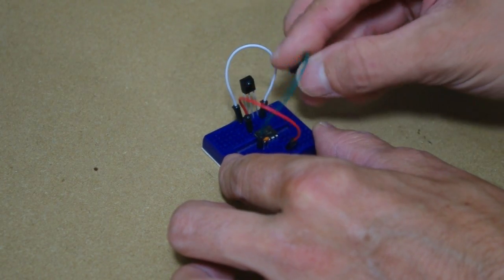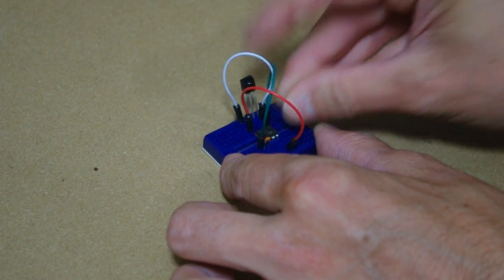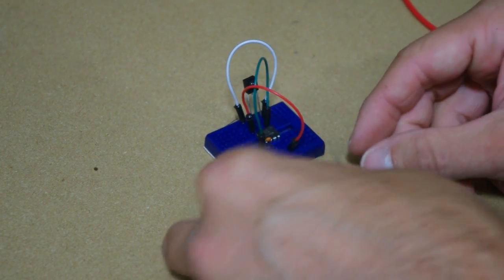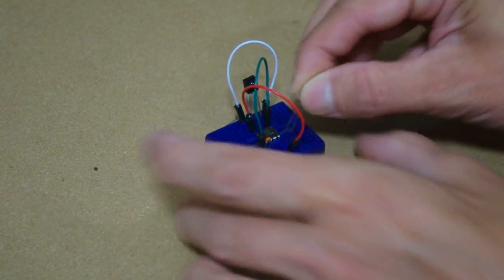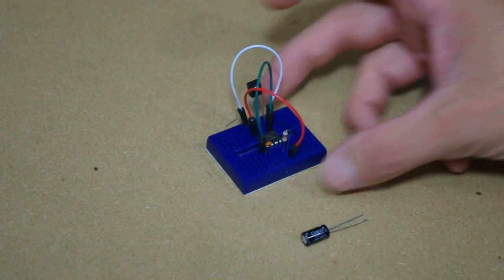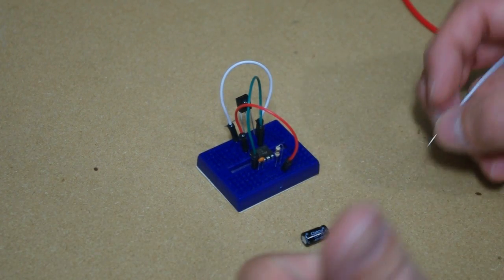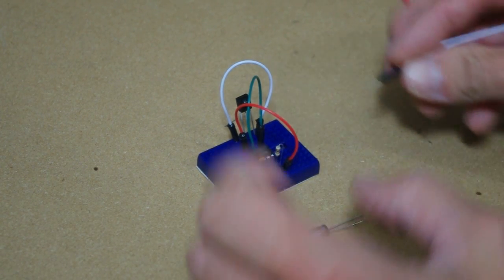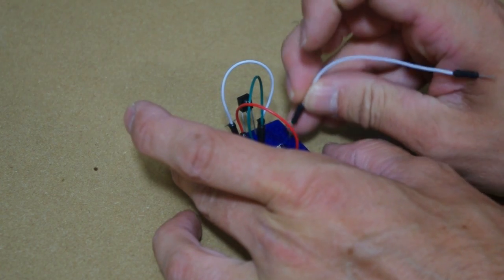So the other pin will go to ground, which is pin one on your 555, and the resistor goes from pin eight to pin seven, and pin seven and pin six will connect together.